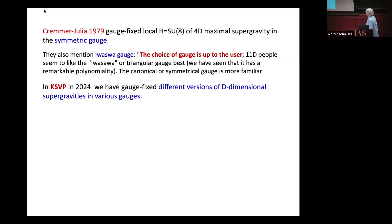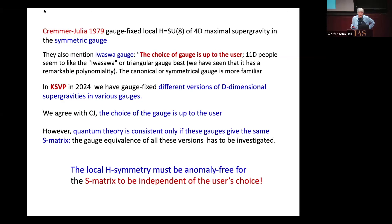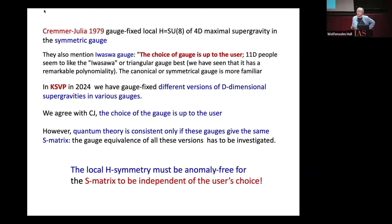Cramer and Julia, back in '79, did gauge fix local SU-8, which is H-symmetry, in symmetric gauge. They also talked about Iwazawa gauge, and said the choice of gauge is up to the user — 11-dimensional people seem to like Iwazawa. In this paper with St. LeBan and Van Pruyne, we did gauge fixing of various versions of D-dimensional supergravity in various gauges. We agree with Cramer and Julia: the choice of gauge is up to the user. However, quantum theory is consistent only if these gauges give the same S-matrix, so we have to study gauge equivalence. The local H-symmetry must be anomaly-free for the S-matrix to be independent of the user's choice.